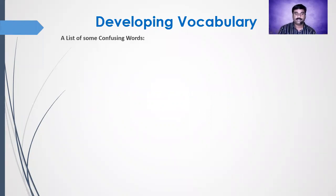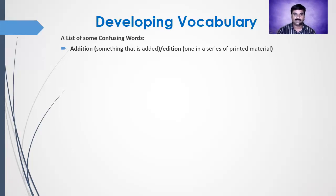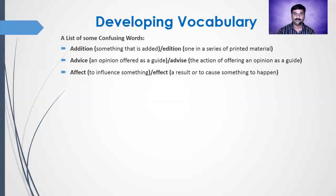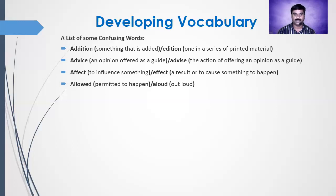Now it would be very helpful for you to know the list of confusing words. 'Addition' means something that is added, and 'edition' means one in a series of printed material. Next, 'advice' and 'advise' — note the basic difference in pronunciation and spelling: when it is V-I-C-E, it is 'advice'; when it is V-I-S-E, it is 'advise'. Then 'affect' and 'effect': 'affect' means to influence something, and 'effect' means a result or to cause something to happen. Next, 'allowed' and 'aloud': 'allowed' means permitted to happen, and 'aloud' means out loud or loudly.